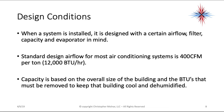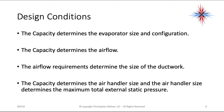Standard design airflow for most air conditioning systems is 400 CFM per ton, and a ton is 12,000 BTUs per hour of cooling capacity. Capacity is based on the overall size of the building and the BTUs that must be removed to keep it cool and dehumidified. The capacity determines the evaporator size, the airflow requirements determine the ductwork size, and the air handler size determines the maximum total external static pressure. Every air handler has a label that tells you the maximum total external static pressure that blower can handle at peak efficiency.